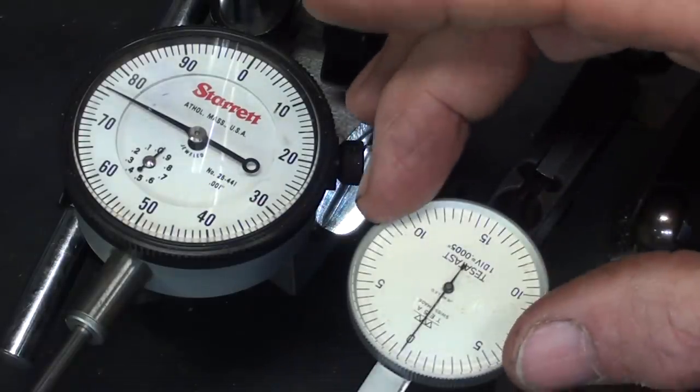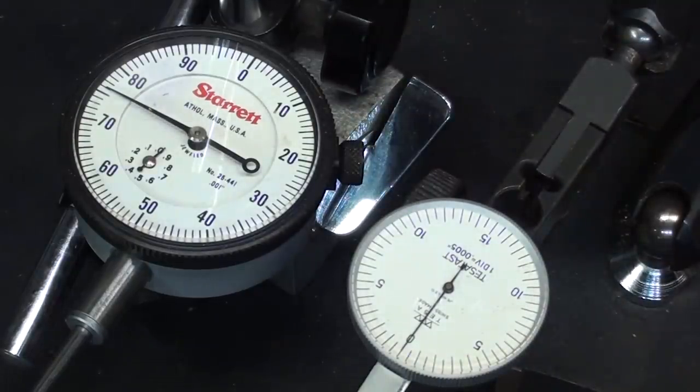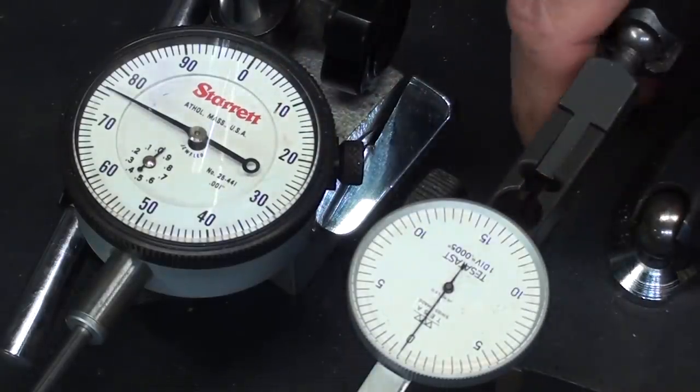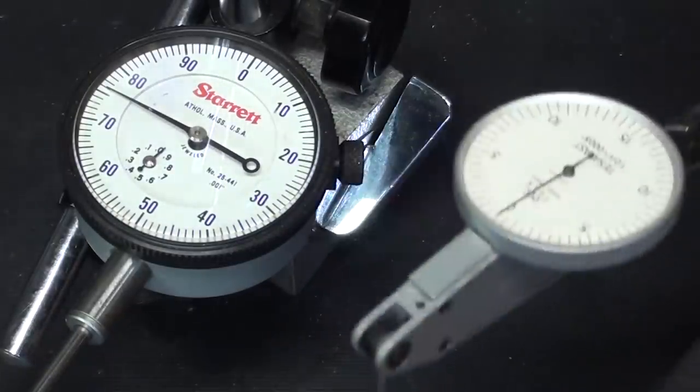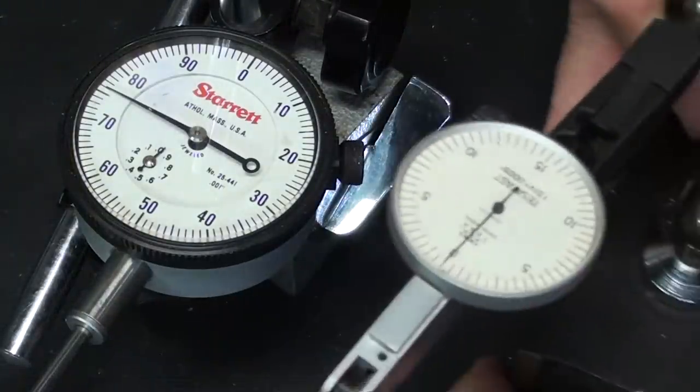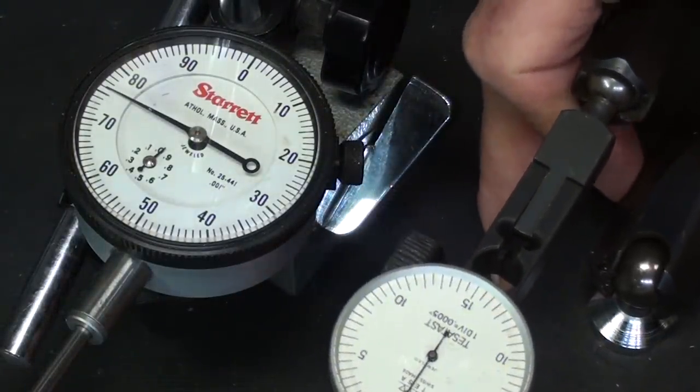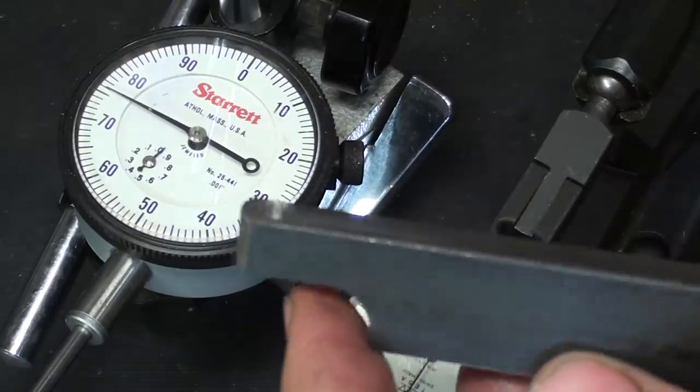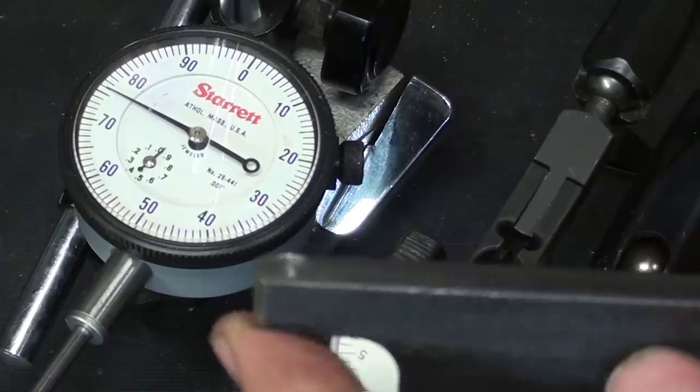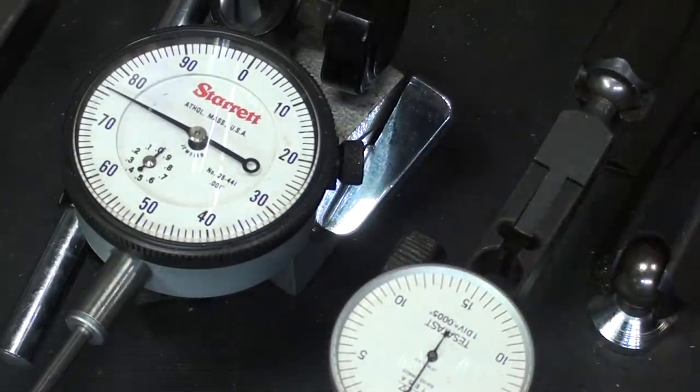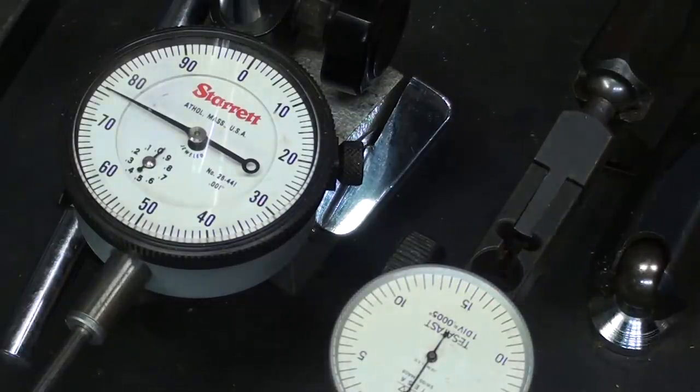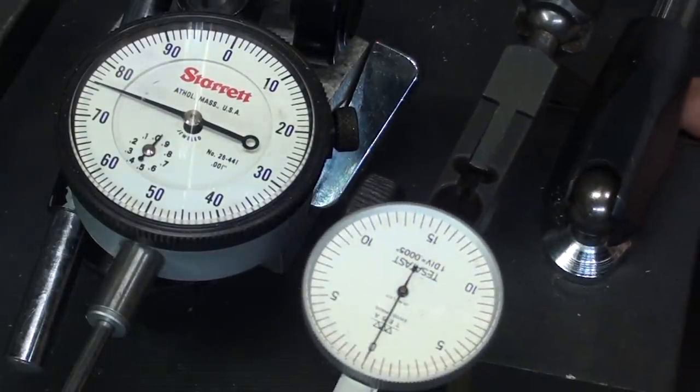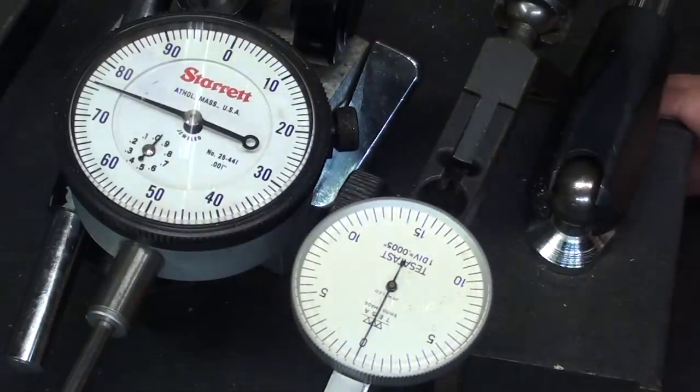But basically I'm going to be using the TESA because it reads to the half a thousandth. Plus it is a relatively large diameter compared to some of the other indicators that I have. And by the way, this is a dial indicator. Notice that I have the probe in that position. This is far from being scientific. I am not a metrologist. I'm just an old shop teacher. But I think you'll find this interesting because I certainly do.